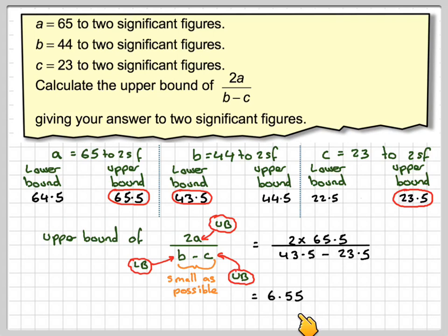That gives me 6.55, and then to 2 significant figures, that gives me 6.6 to 2 significant figures.